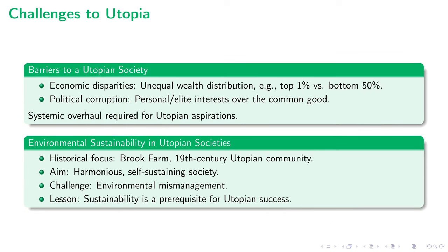Economic disparities, a harsh reality of our society, pose significant obstacles to utopia. One statistic rings alarmingly clear: the top 1% of the population being wealthier than the bottom half. This imbalance not only denies equal opportunities, but also stymies the universal welfare our utopian society necessitates. Moving on to political corruption, it's an equally stifling barrier, eclipsing public interests under the weight of personal or elite privileges. These complexities underline that a systemic transformation, ethical and moral, is needed for utopia to be more than just a word.